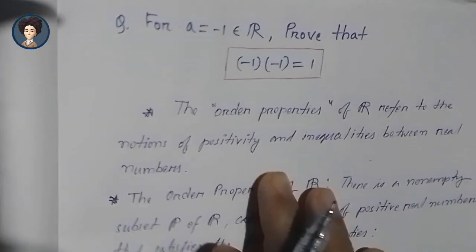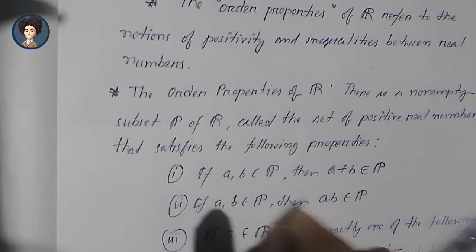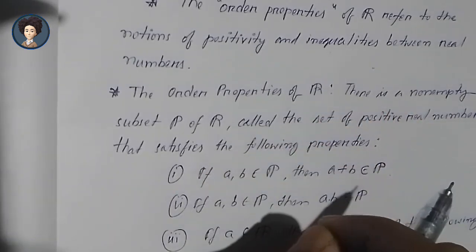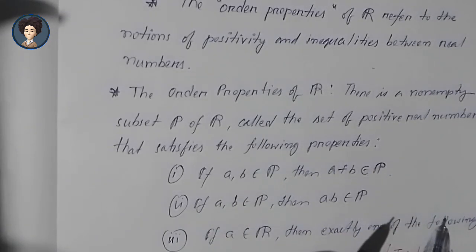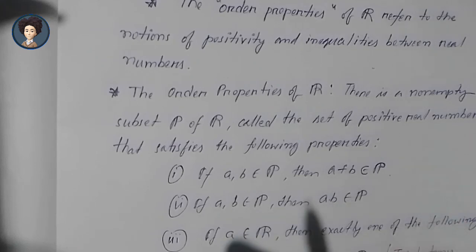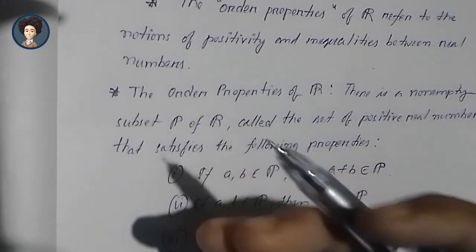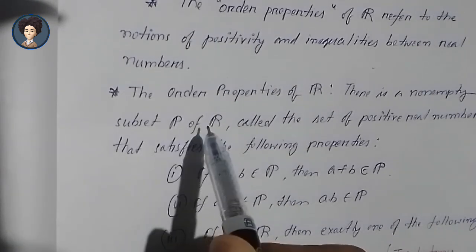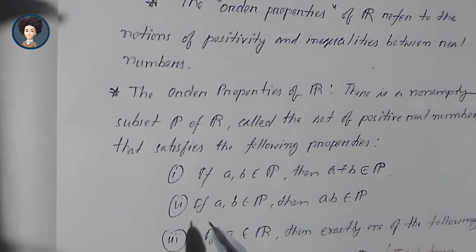The order properties have three basic properties by which we can perform calculations involving inequalities. To define these three order properties, we take a non-empty subset P, which is called the set of positive real numbers.